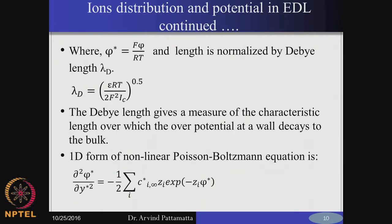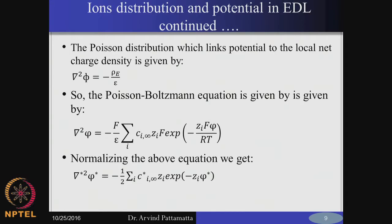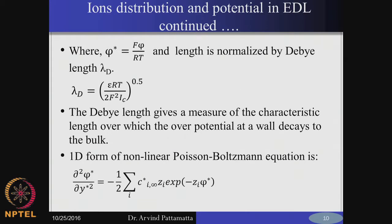We non-dimensionalize with a non-dimensional electrostatic potential phi star, and coordinates are non-dimensionalized with the Debye length lambda_d, that is the extent of the diffuse layer. With these two, the Faraday's constant is actually absorbed, so in the non-dimensional form you do not have the Faraday's constant — that was a mistake in the last presentation, please correct that. Now we write down the non-linear Poisson-Boltzmann equation in one direction, along y, to get a profile along y.